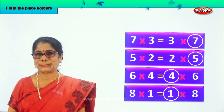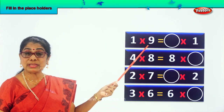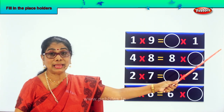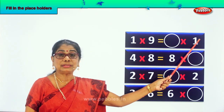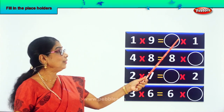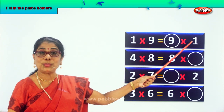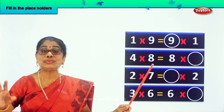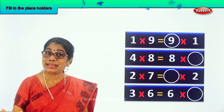Good. Let's take another sum. Look. 1 into 9. 9 ones are 9. Now the answer there has to be the same. Equal to dash into 9 — you have to get the answer 9. So what number into 9 will give you 9? 1. Very good. 1 into 9 is also equal to 9 into 1. Both the answers on this side and this side have to be the same. That's why they are equal. 1 into 9 is also equal to 9 into 1.